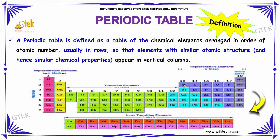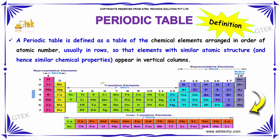These horizontal arrangements are called periods and they are referred to as rows. This area is called s-block elements, this area is transition elements, and this one is p-block elements. The s-block and p-block together are called representative elements.